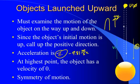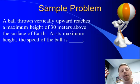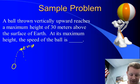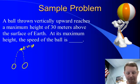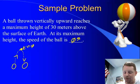A ball thrown vertically upward reaches a maximum height of 30 meters above the surface of the Earth. At its maximum height, the speed of the ball is what? Well, if we throw a ball up, at its highest point for a split second it stops — has a velocity of zero — and then it comes back down. So what's its speed at the highest point? Zero meters per second. That easy.